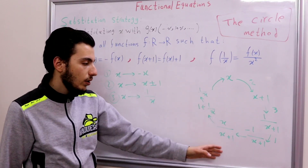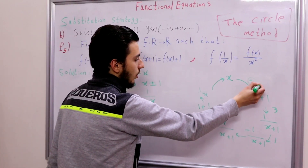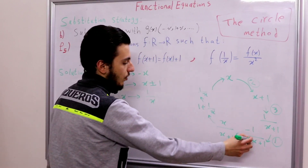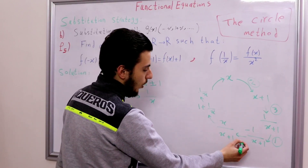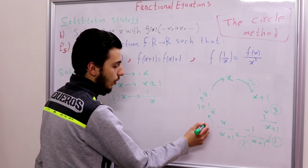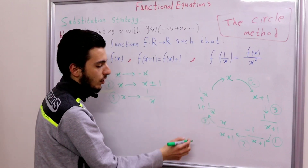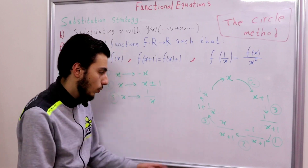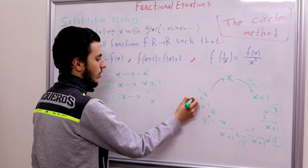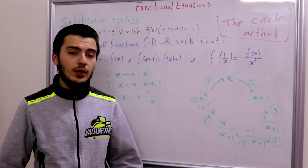Let's label the processes used at each step: second (add 1), third (reciprocal), first (negate), second (add 1 to get x/(x+1)), third (reciprocal), second (subtract 1), and third (reciprocal) — and now we've obtained our complete circle. What's next is to check whether this circle is effective, in other words, whether it actually solves the problem, since I could create infinitely many circles that do not.